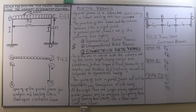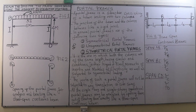The joints of such a portal frame will not be subjected to any translation or side sway. The reason is that joints B and C are welded together and the columns are carrying equal amounts of load, so there are no unbalanced forces that would cause the portal frame to sway or translate to either side.